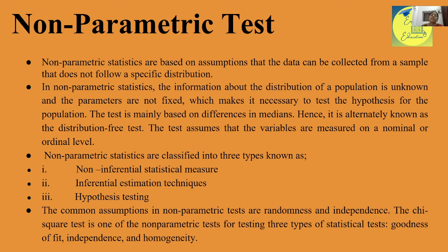Now, the non-parametric test — how is it different from parametric test? Non-parametric statistics are based on assumptions where the data can be collected from a sample that does not follow a specific distribution. In non-parametric statistics, the information about the distribution of the population is unknown and the parameters are not fixed. This test is mainly based on differences in median. We use the median because we do not know how skewed or how varied the data is.